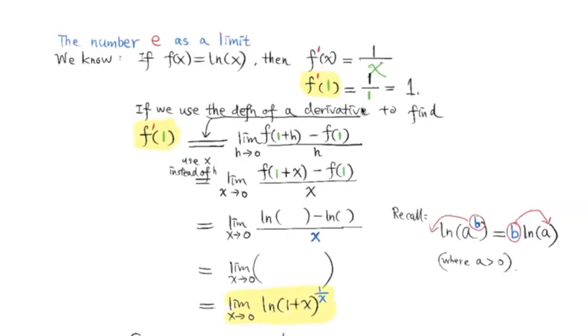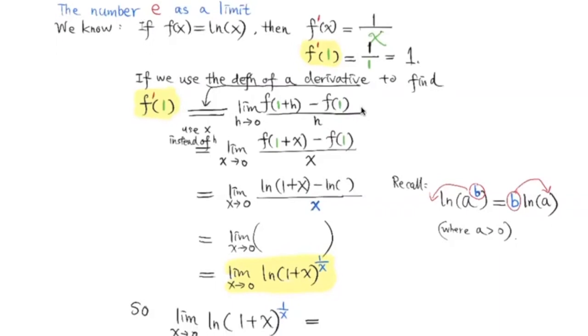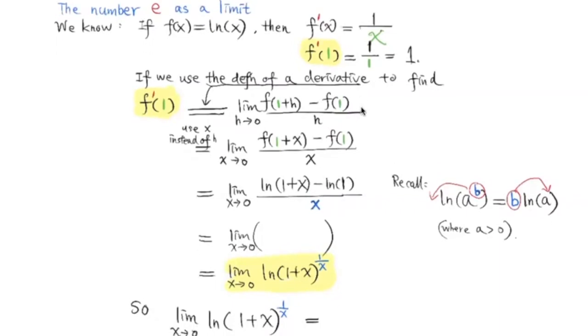Remember, we can also find f prime by the definition of derivative and express it as the limit. In this definition, instead of using h for the variable, we can use x as the variable. The function here, f of x, is equal to ln of x. So f of 1 plus x is equal to ln of 1 plus x, and f of 1 is equal to ln of 1. ln of 1 is equal to 0.